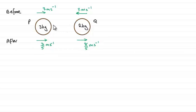So if we're going to try and find this impulse exerted on P by Q, it's going to be an impulse in this direction. I'm going to label it like this with this arrow. I'm going to call that impulse I.